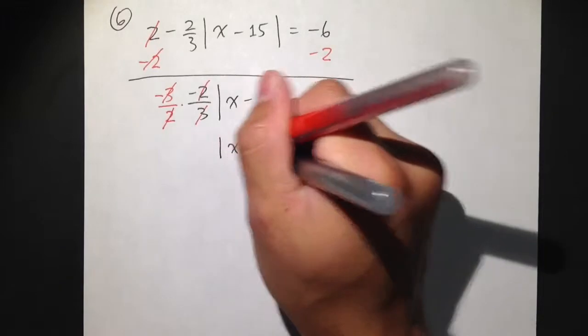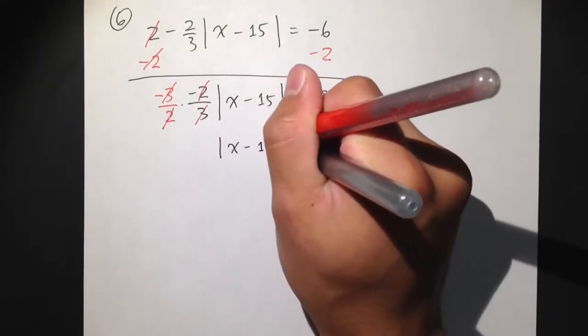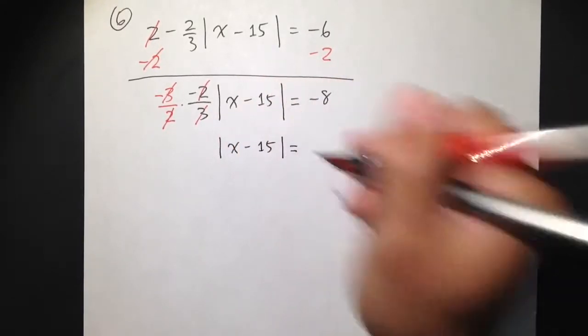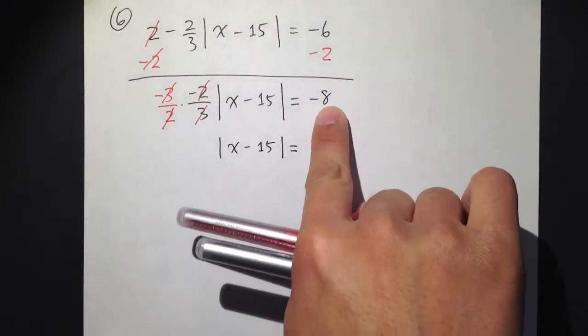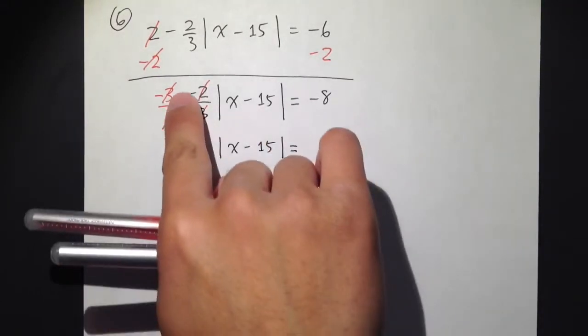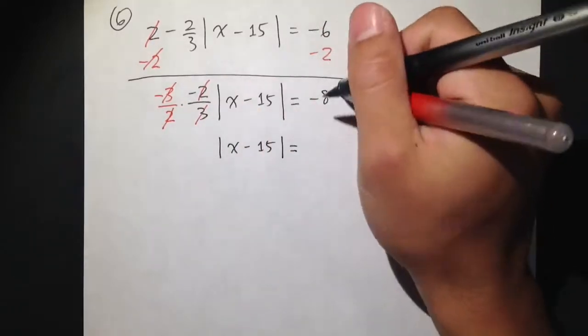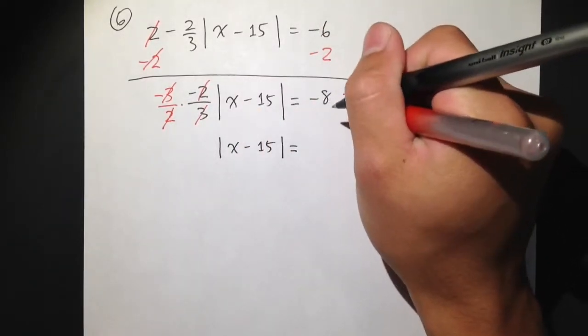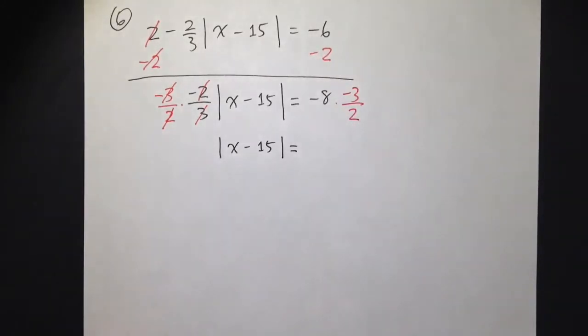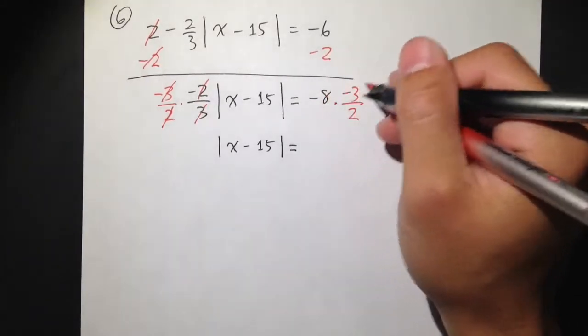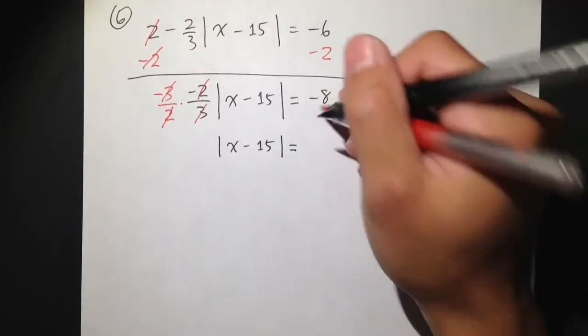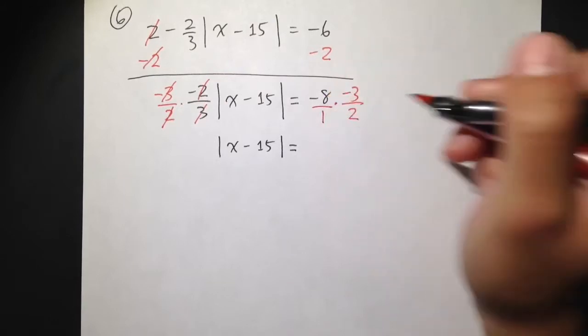Absolute value of x minus 15. And that's equal to... I also have to multiply the negative 8 by negative 3 over 2. And let's do that. Let's multiply this by negative 3 over 2. And maybe put that to make that more feasible. So I have a whole number multiply a fraction. Let's make the negative 8 as negative 8 over 1.